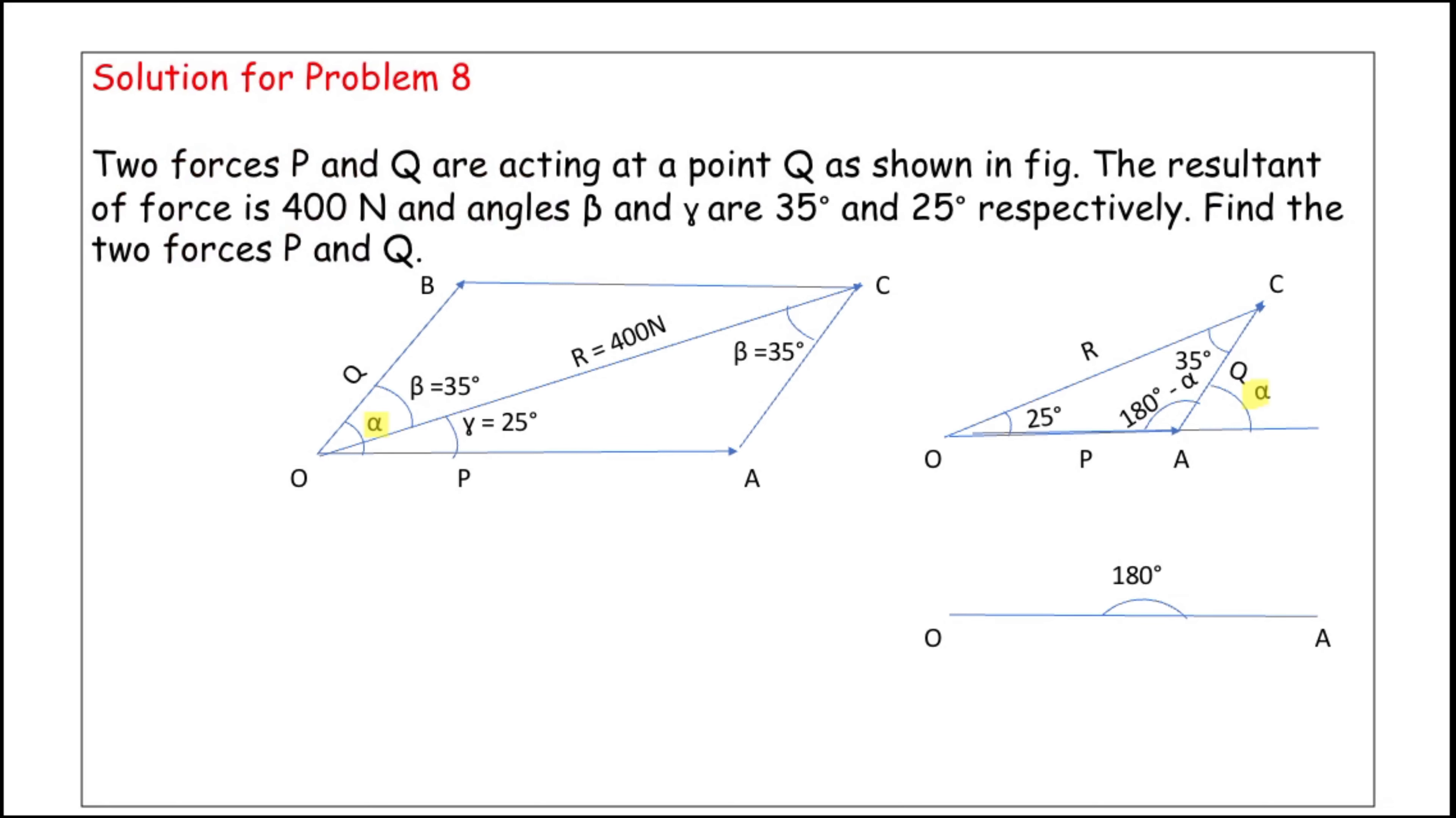Given data is: resultant equal to 400 Newton, beta equal to 35 degrees, and gamma equal to 25 degrees. To find: forces P and Q.